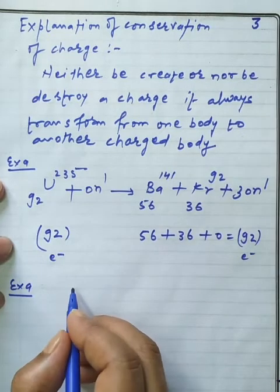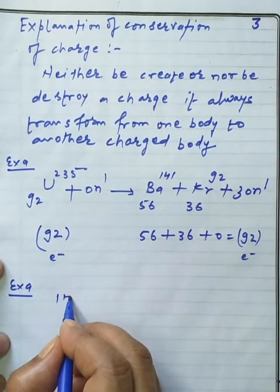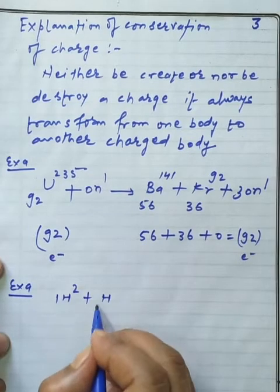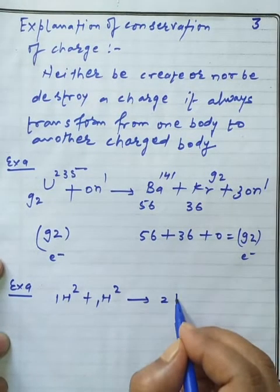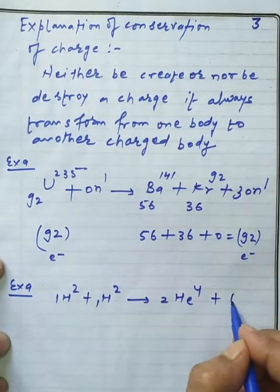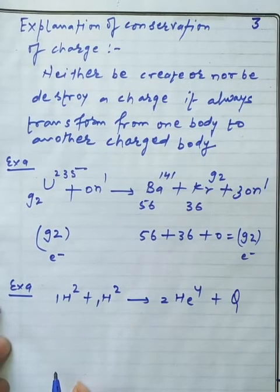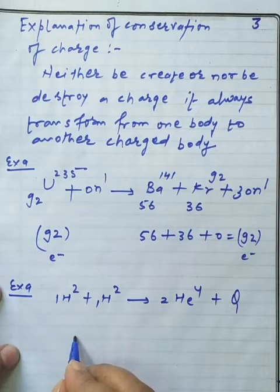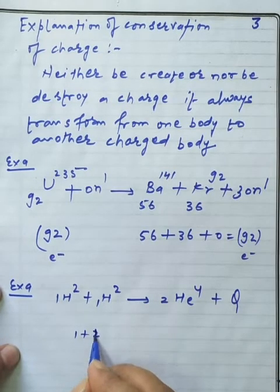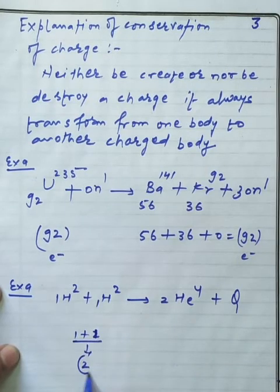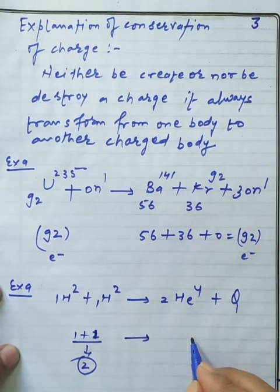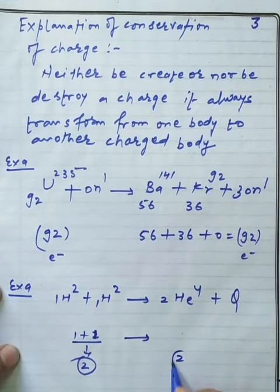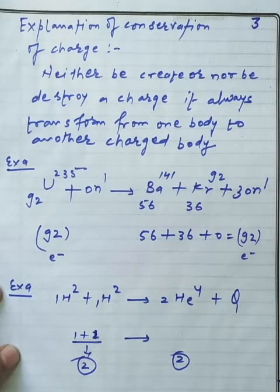Another example is a nuclear fusion reaction: deuterium ₁H² plus ₁H² reacts to form helium ₂He⁴ plus Q amount of energy. Calculating the number of electrons before the reaction: 1 plus 1 equals 2. After the reaction, the number of electrons is also 2. This confirms conservation of charge in both chemical and nuclear reactions.